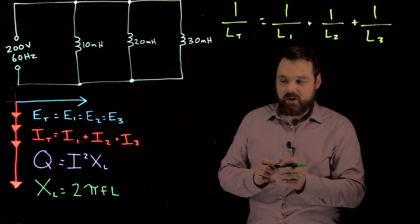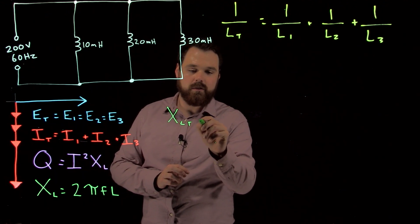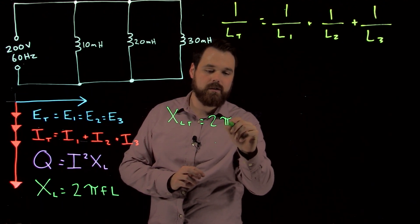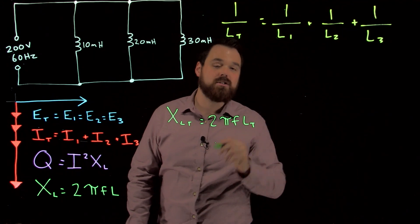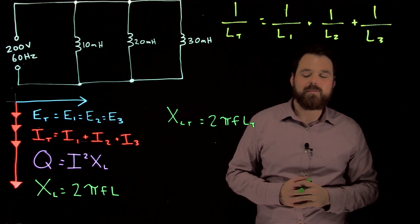We could go XLT equals 2 times pi times frequency times the total inductance. That'll work for us.